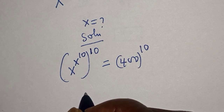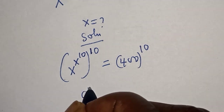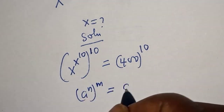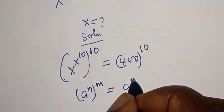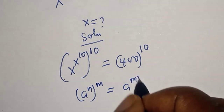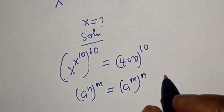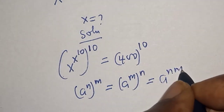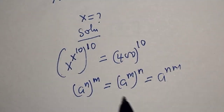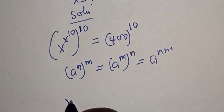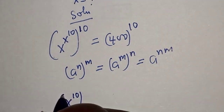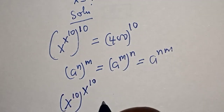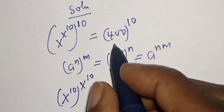Take note of this rule: a raised to power n, raised to power m, is equal to a raised to power m raised to power n. Applying this rule, we get s raised to power 10, raised to power s raised to power 10, is equal to 400 raised to power 10.